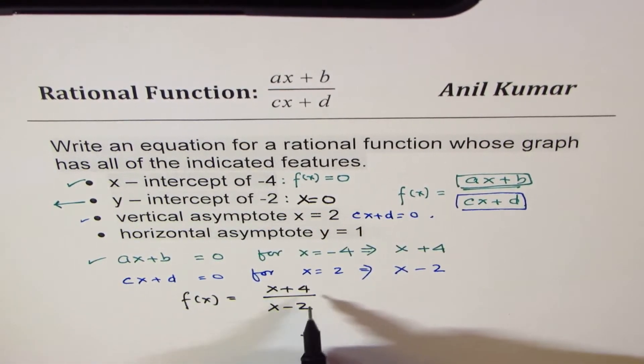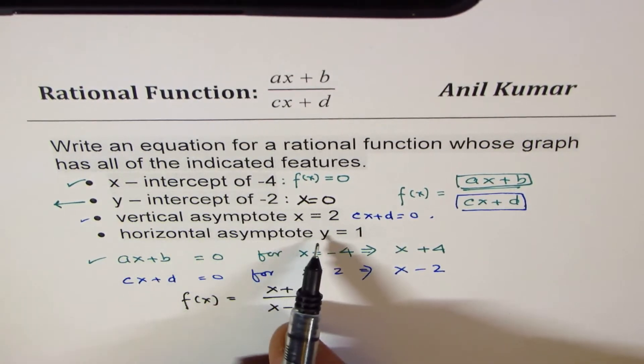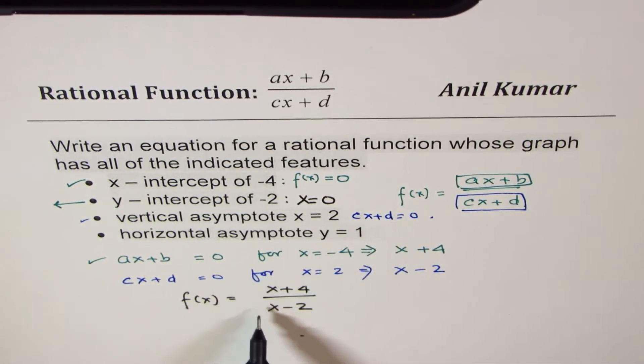Y intercept of minus 2 means that when x equals to 0, y is minus 2. So if I write 0 here, I get 4 over minus 2, which is minus 2. It works. Horizontal asymptote y equals to 1. The ratio of leading coefficient is 1. So that also works. So this becomes your answer.